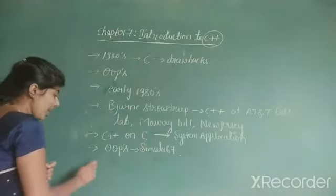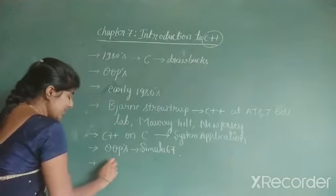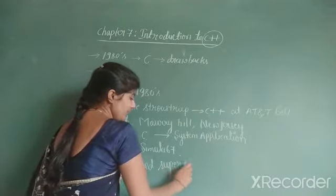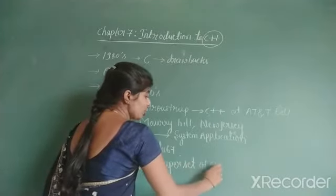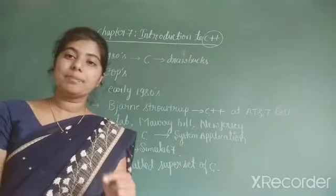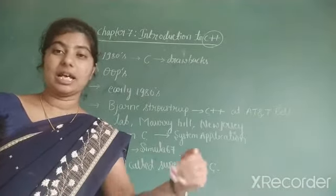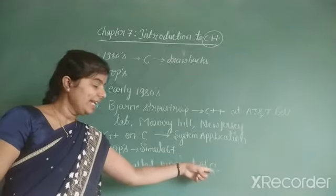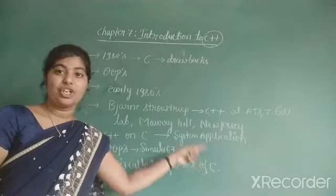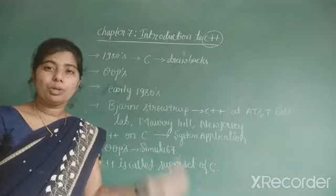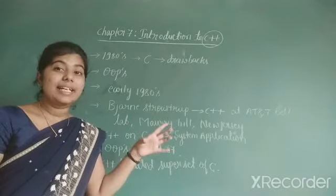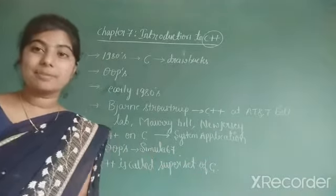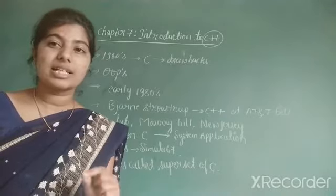C++ is called the superset of C. The reason is that any valid code written in C programming language can be easily implemented in C++ as well. However, vice versa is not true — not all C++ code can run in C. Hence C++ is called the superset of C.